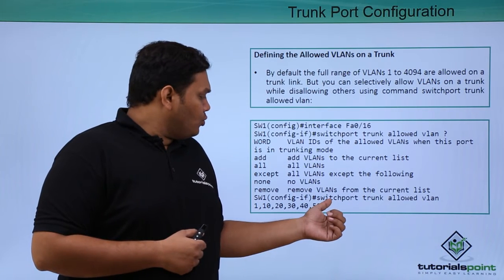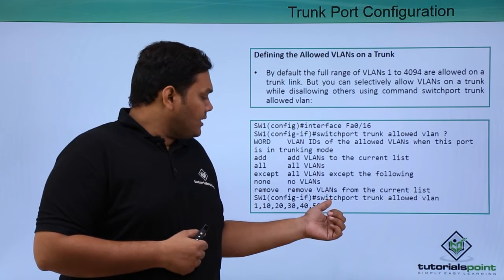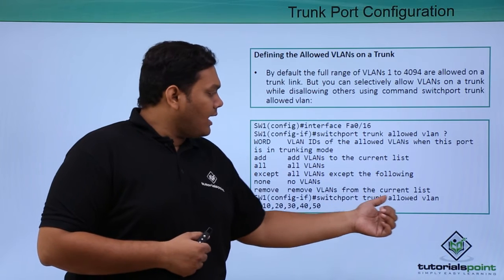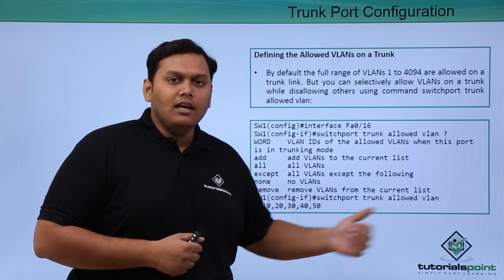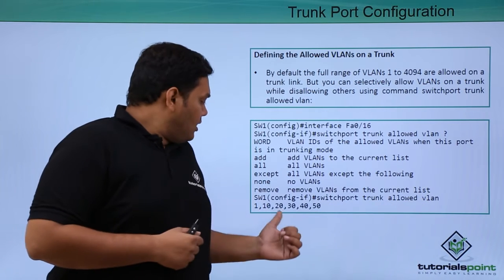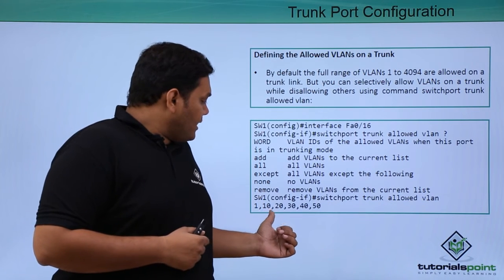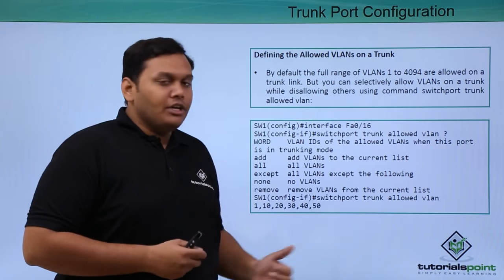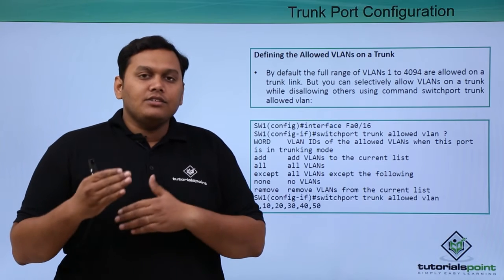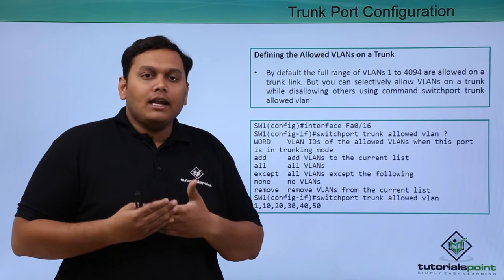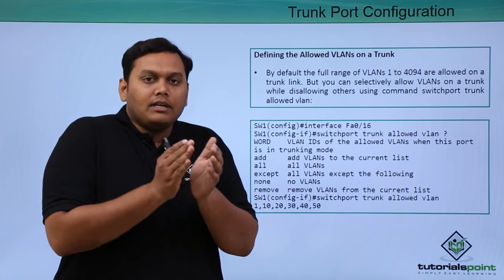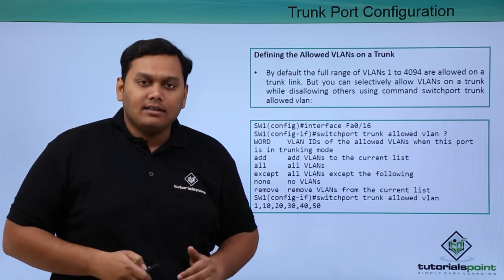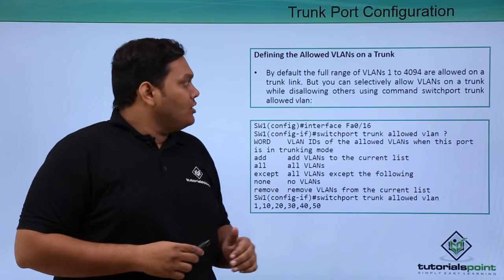You enter the command switchport trunk allowed VLAN with values 1, 10, 20, 30, 40, and 50. By this, you can only allow those particular VLANs to access the trunk link.